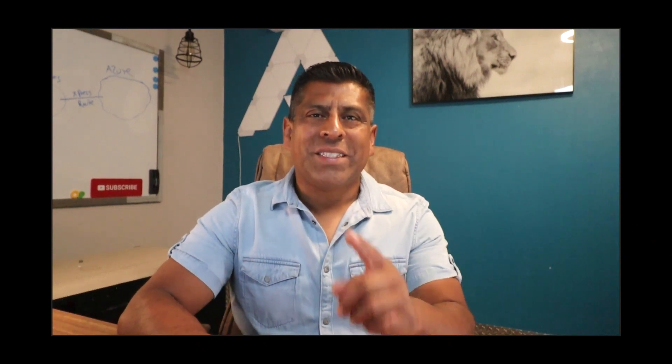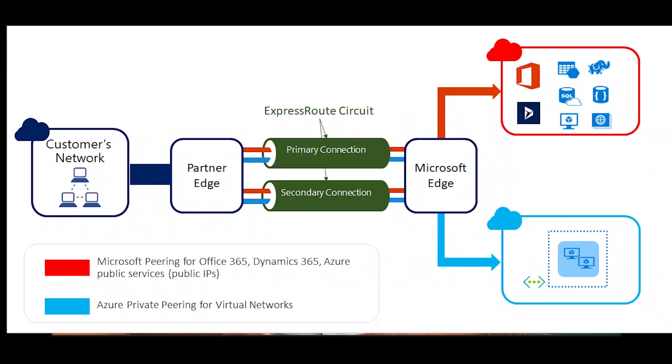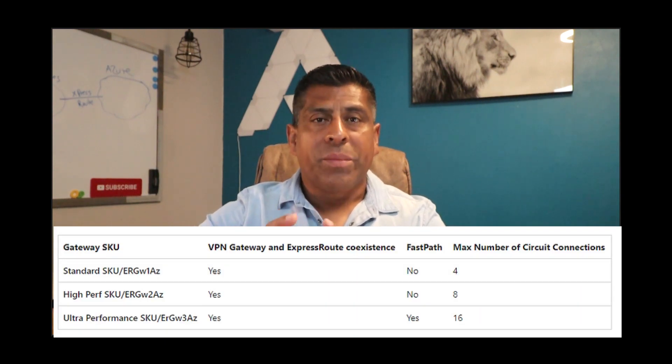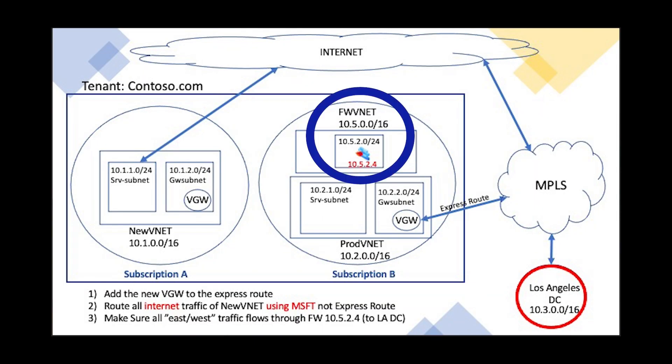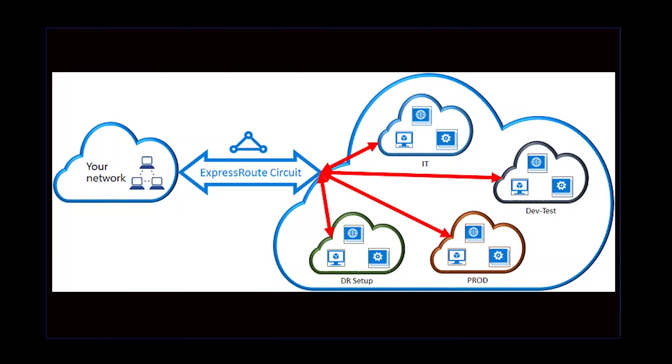Hey everybody, Freddy here with another video. This time we're going to be focusing on Azure ExpressRoute — how to connect an on-prem data center to Azure cloud through the use of an ExpressRoute circuit, what the MSEE is, how you connect to it, the virtual network gateway (VGW), connections, routing, BGP connections, and how routing takes place when you introduce an NVA — a network virtual appliance — which is typically a firewall in a hub-and-spoke configuration.